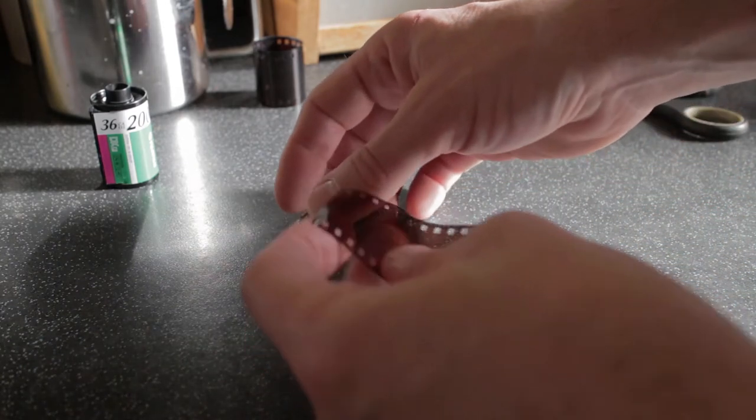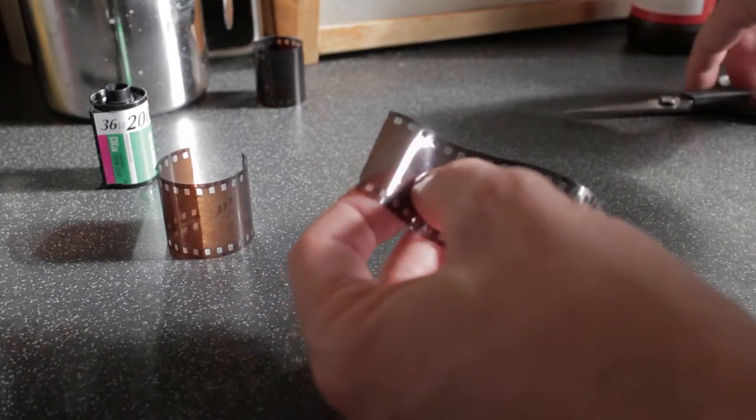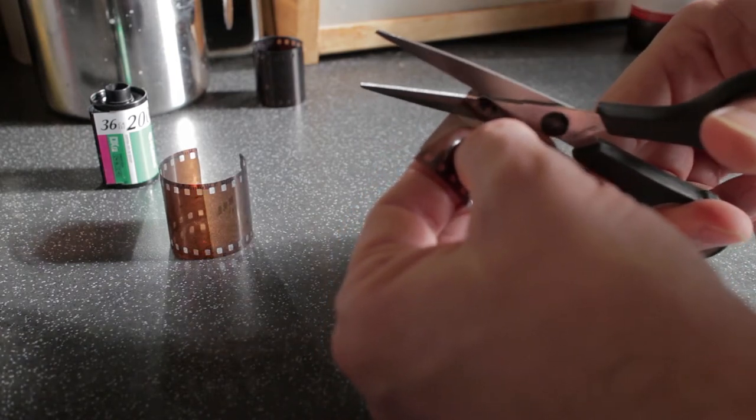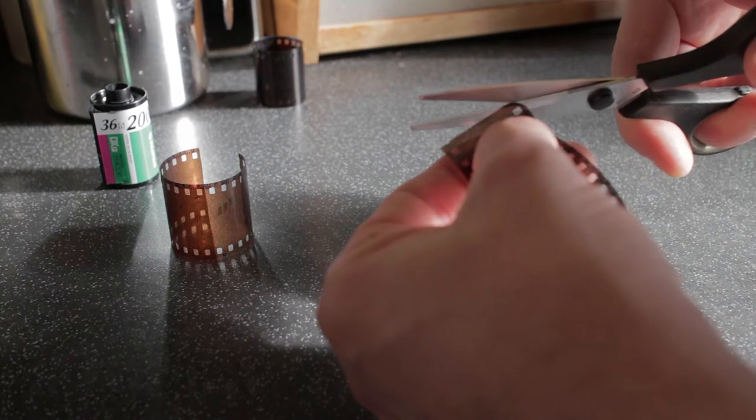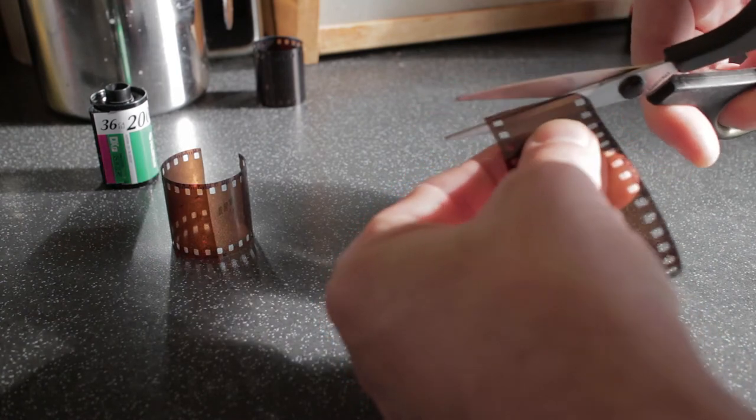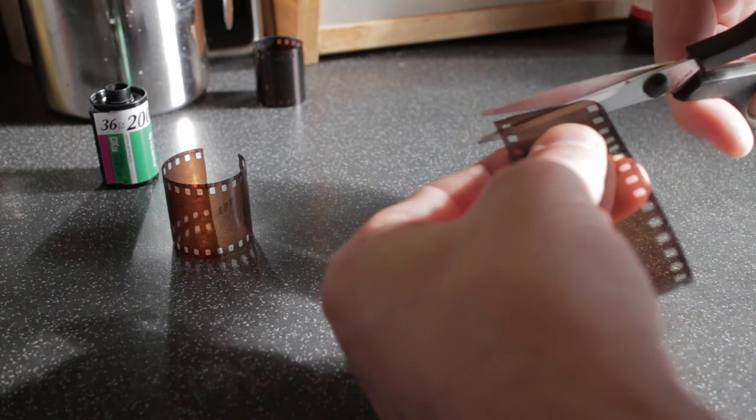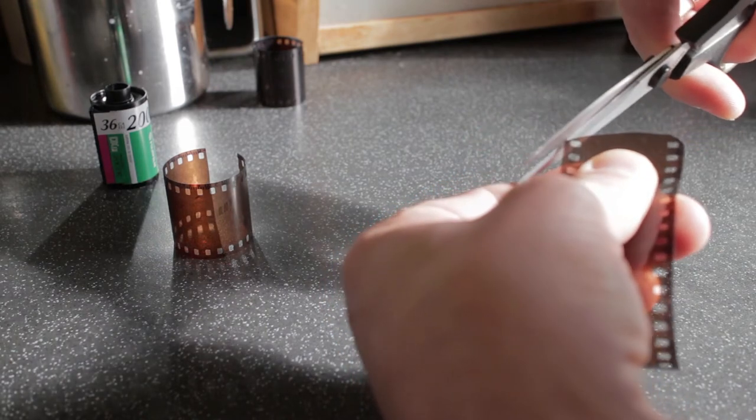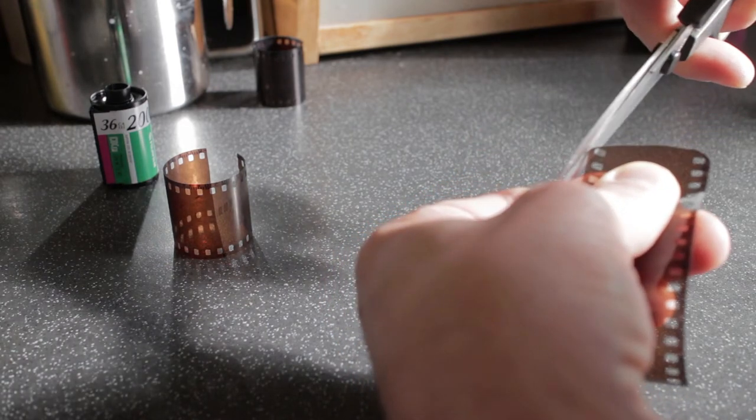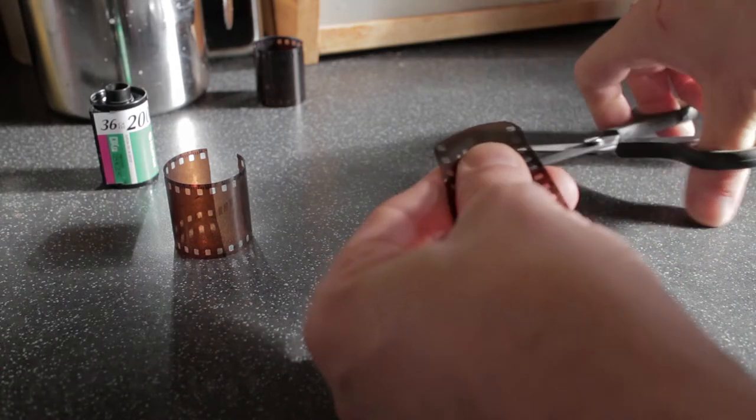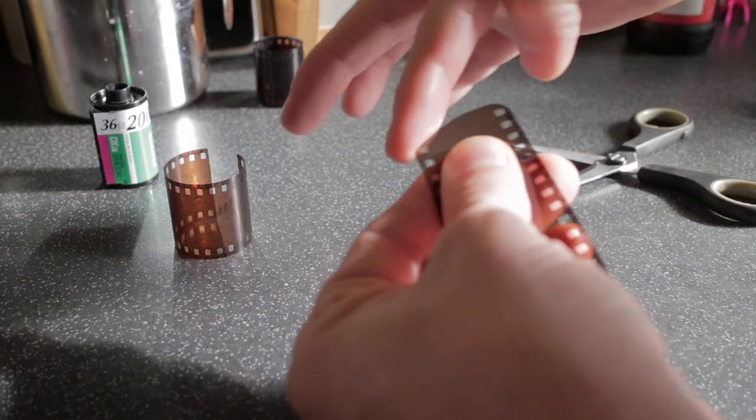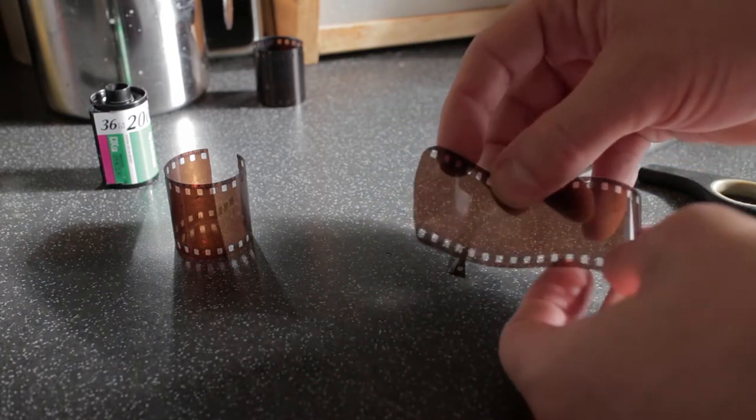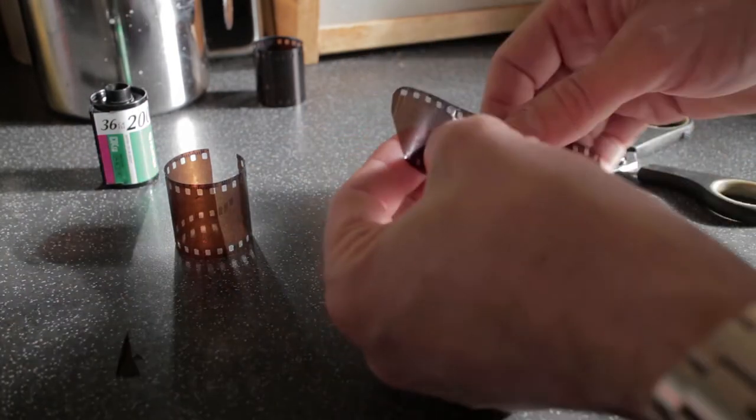And then what you need to do is take one of your pieces of film and you need to round off this corner and shape this down in this manner. And the most important thing is you need to round off the corners because what you're trying to do is not scratch the film that you're retrieving from the canister. So that's the top sheet.